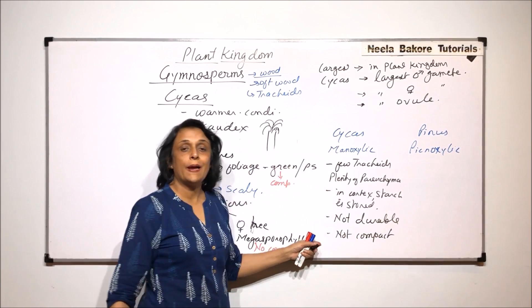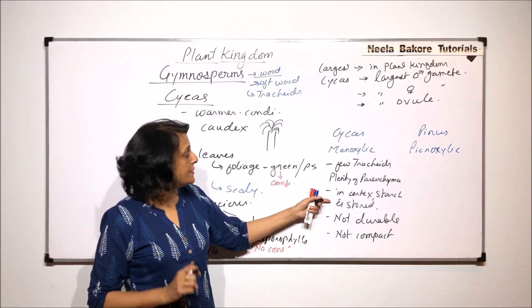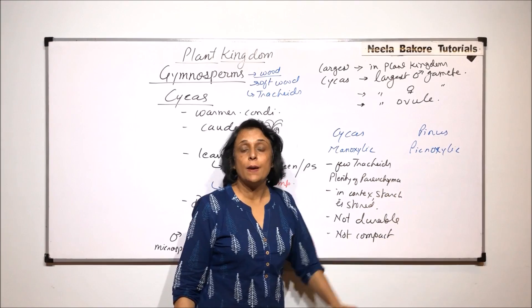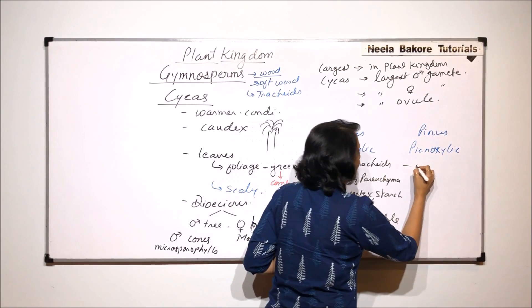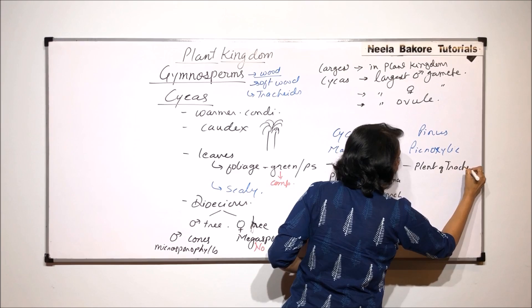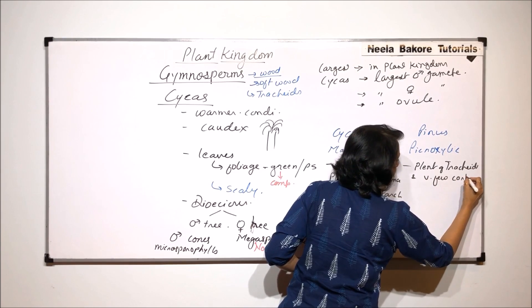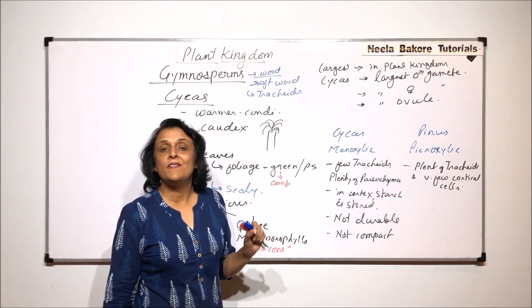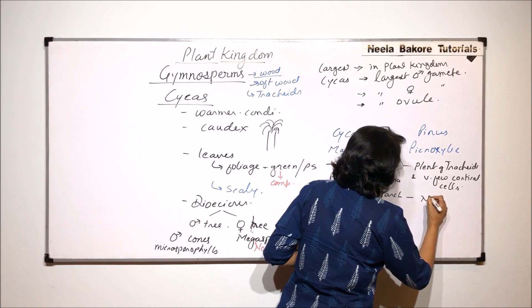And because of this parenchyma in plenty and less of tracheids, it is not compact also. It is not a compact wood. It is not that durable, because of the starch which is present inside, and it has more of parenchyma and less of tracheids. When we compare it with pyknoxylic wood it is just reverse. Because it has mostly or plenty of tracheids and very few cortex or cortical cells.